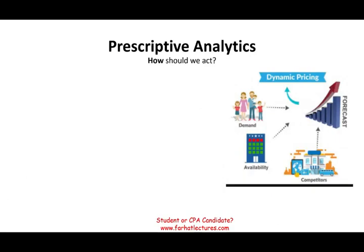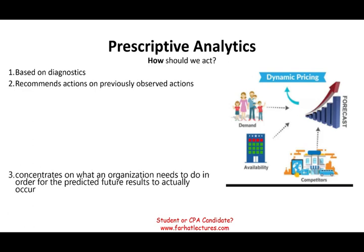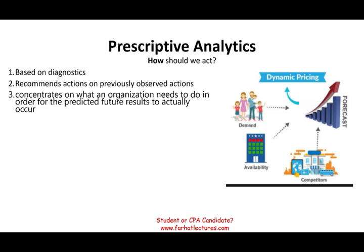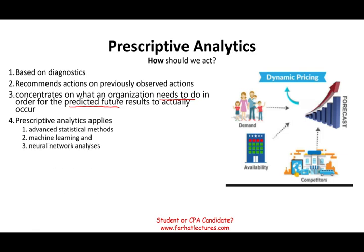Prescriptive analytics is like a prescription from a doctor — basically, how should we act to get better? It recommends actions based on previously observed outcomes. The concern is what an organization needs to do in order to make a predicted future result actually occur — ideally increasing sales. We use advanced statistical analysis, machine learning, neural network analysis, and artificial intelligence — any advanced tools that can help us.